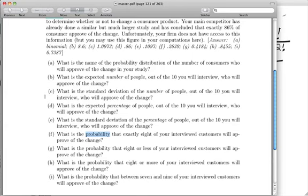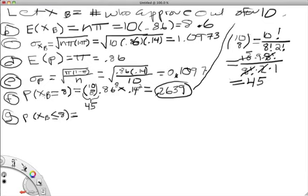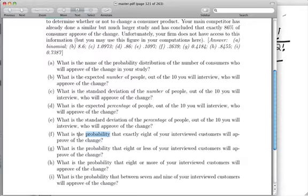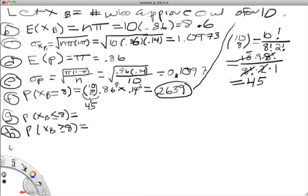Let's now go back and look at part h. What's the probability that 8 or more will approve? Well what h is asking for we can write is the probability that X_B is greater than or equal to 8. Well we're going to use excel and we'll answer this in a second then finally part i what is the probability that between 7 and 9 will approve of the change. So i is asking the probability that X_B is between 7 and 9 alright.